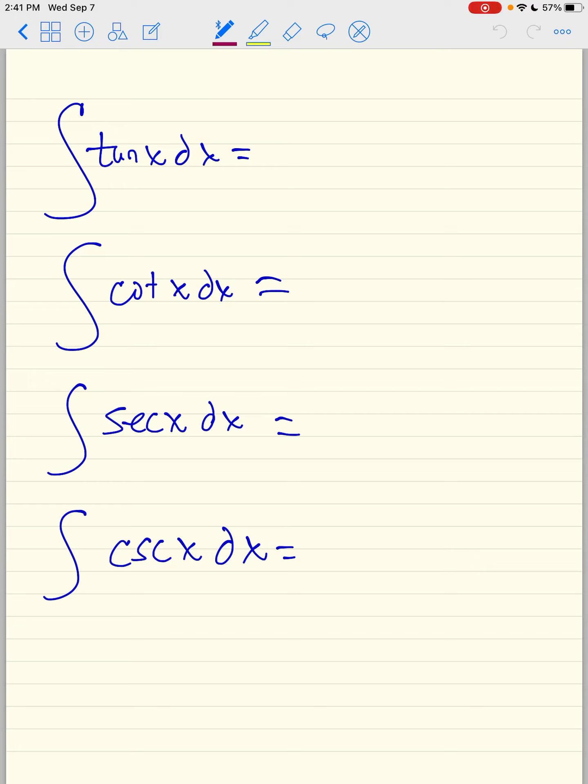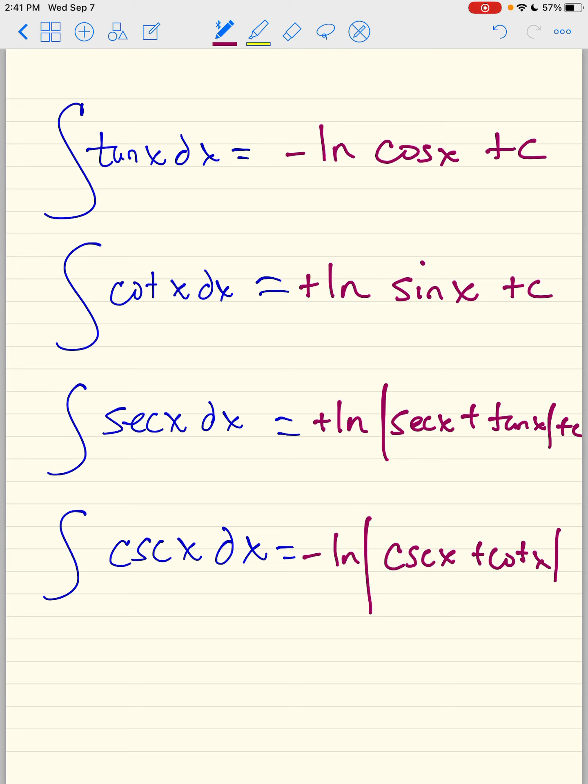So the integral of secant x is natural log of u. And look what's in here. u is secant x plus tan x. So what do we do here? How can I memorize these really quickly? Well, first I put tan and cotan. This person is negative natural log of cosine x. So this person is positive natural log of sine x. If this person is positive natural log of secant x plus tan x, what do you think cosecant is going to be? Negative natural log of cosecant x plus cotan x.